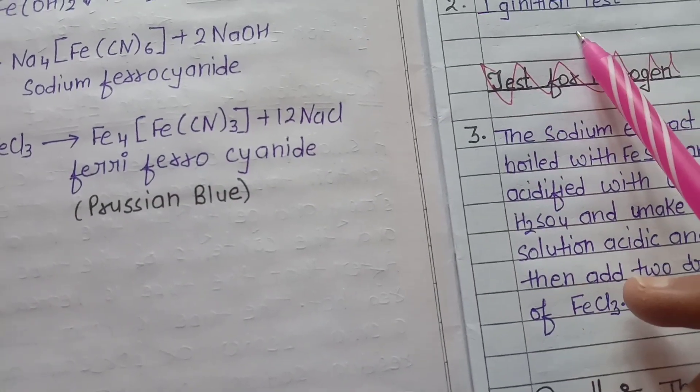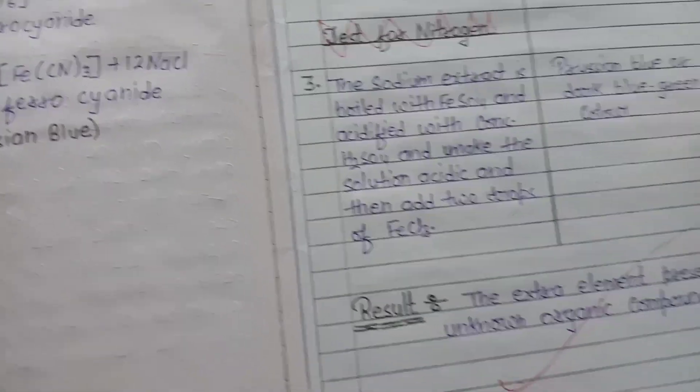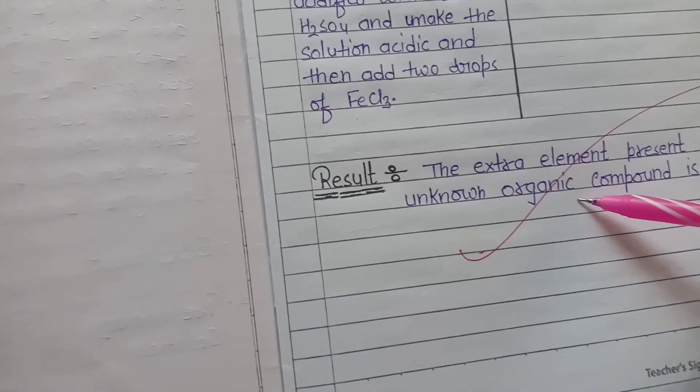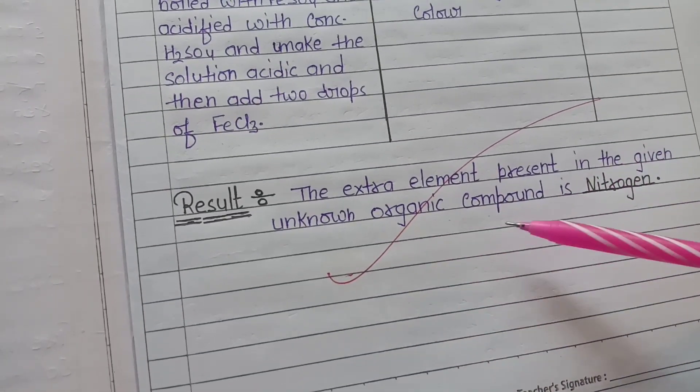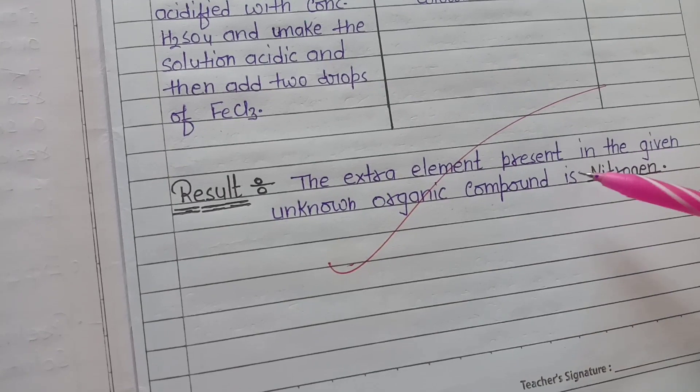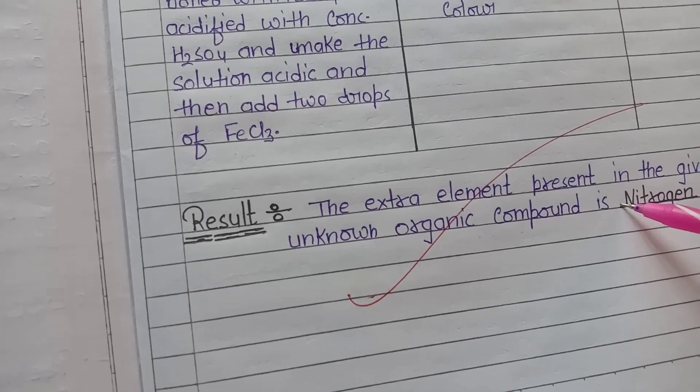And then in the last portion we have to write the result - that the extra element present in the given organic or unknown organic compound is identified. That's for your practical, BSc first semester.